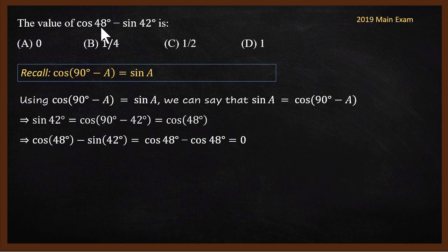Usually in the exam they will not ask to find cos and sin of completely different angles — it will be a complementary angle problem. So the answer is 0.